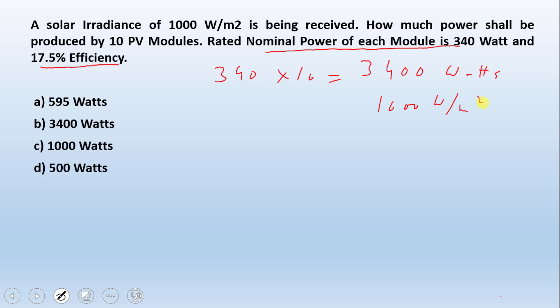This is the straightforward answer. Do not get overwhelmed by the number 17.5% efficiency. The efficiency is basically used when you are given the area of a PV module.